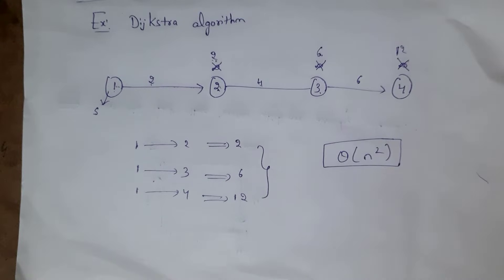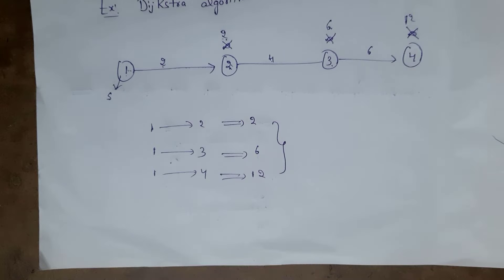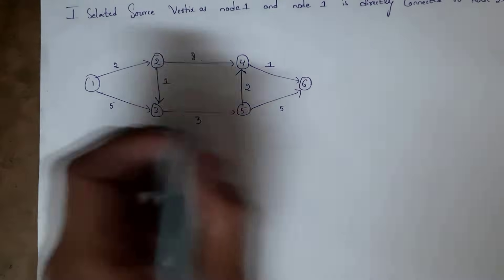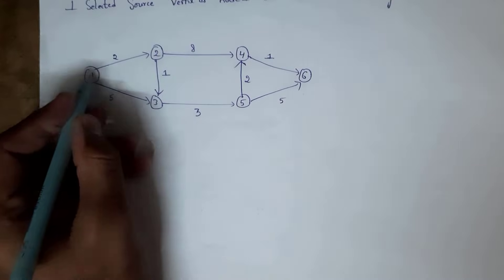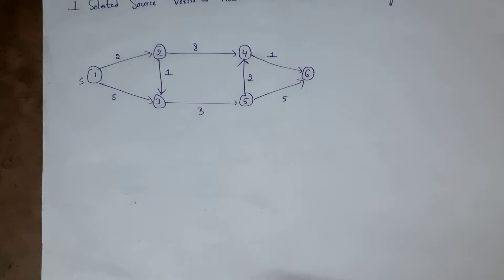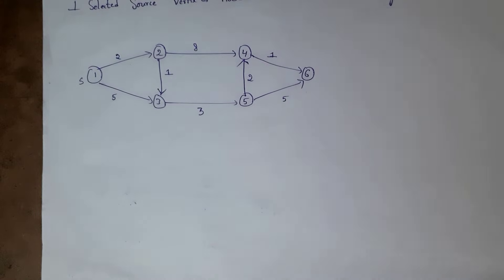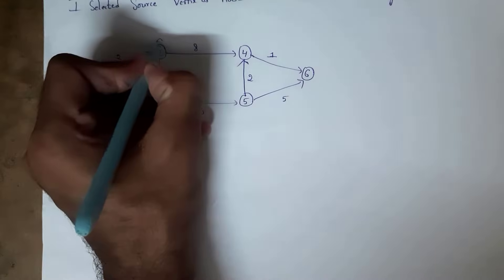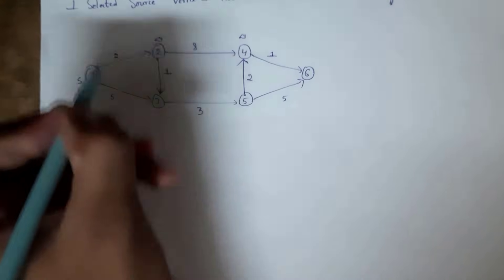The worst case time complexity of Dijkstra's algorithm is theta of n squared. Now I will give another example. In step 1, I am selecting one source node — I am selecting node 1 as the source node. We need to mark all other nodes as infinity because we have not yet found the shortest distance.